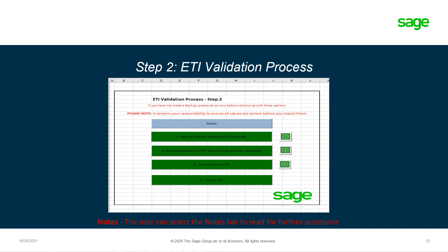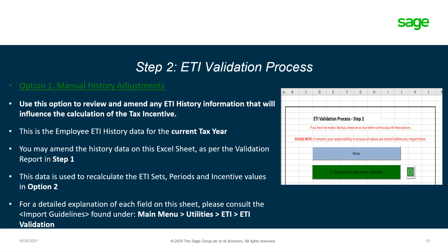We will be focusing on step two of the ETI validation process. If you have not made a backup, please do so before continuing. Please note that it will remain your responsibility to ensure all the values are correct before you import them. There is a notes bar available should you need further assistance. Part of the ETI validation process step two, there is option one: manual history adjustments. Use this option to review and amend ETI history information that will influence the calculation of the ETI tax incentive. This is the employee ETI history data for the current tax year. You may amend the history data on the Excel sheet as per the validation report in step one. For a detailed explanation of each field on this sheet, please consult the import guidelines found under main menu, utilities, ETI, ETI validation.